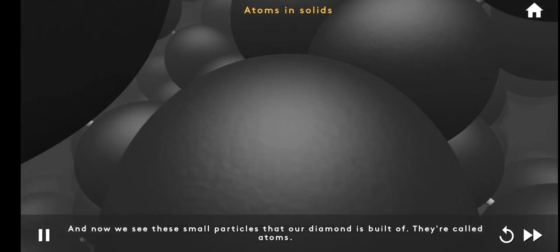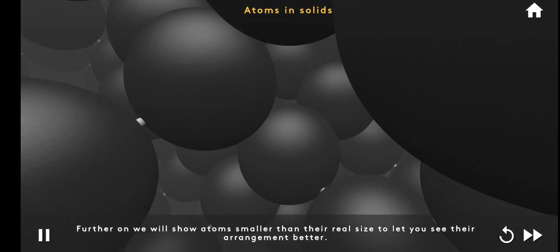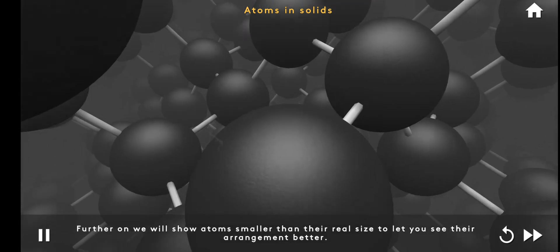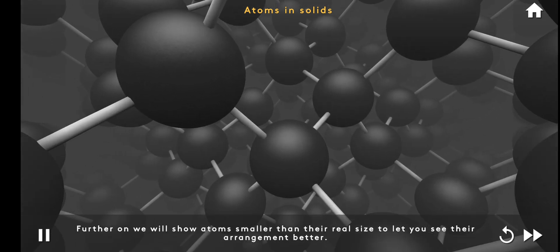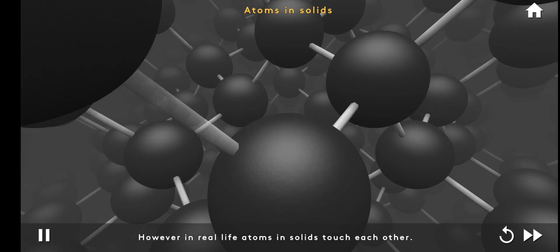And now we see these small particles that our diamond is built of. They're called atoms. Further on, we will show atoms smaller than their real size to let you see their arrangement better. However, in real life, atoms in solids touch each other.